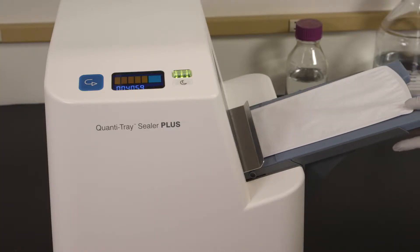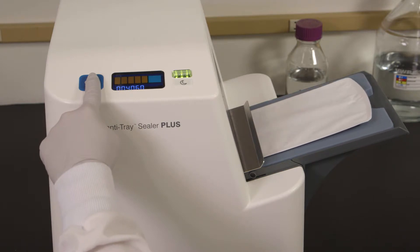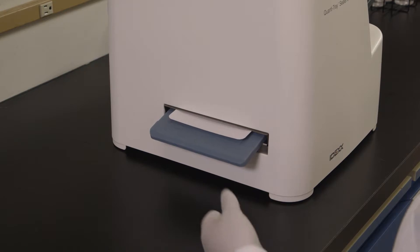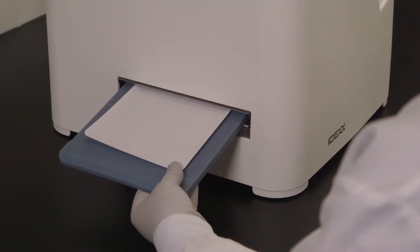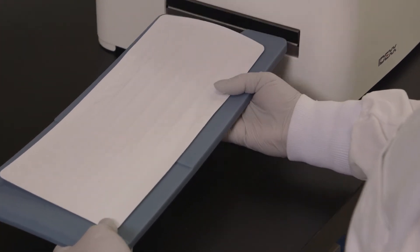If you need to reverse the motor, press and hold the reverse button. However, do not reverse the motor if the rubber insert is completely inside the sealer. The sealer distributes the sample mixture into the QuantiTray LEG-ALERT wells, seals the wells, and partially ejects the sealed tray. Remove the rubber insert and tray from the sealer.